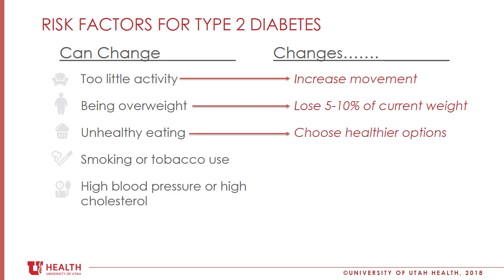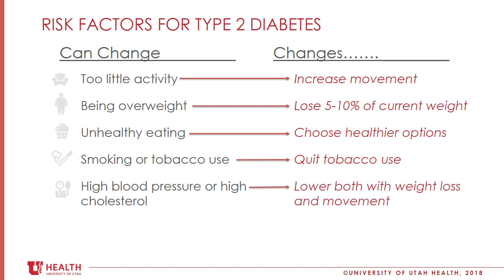For healthy eating, choosing healthier options such as adding color to your plate with a variety of non-starchy vegetables will help decrease other portion sizes and contribute to weight loss. For those using tobacco or smoking, there are resources available if you are ready to make those changes. We'll talk more about lowering blood pressure and triglycerides in Session 2. The good news is that eating more vegetables, choosing whole grains, increasing activity, and weight loss will all help prevent type 2 diabetes as well as lower blood pressure and triglycerides. That's a pretty good deal.